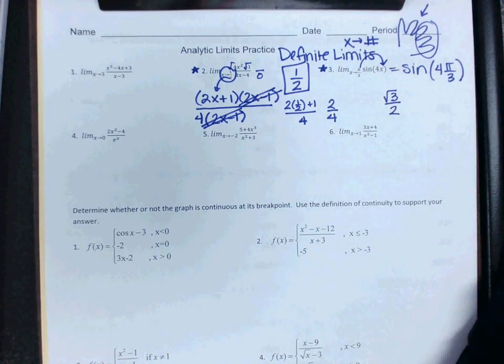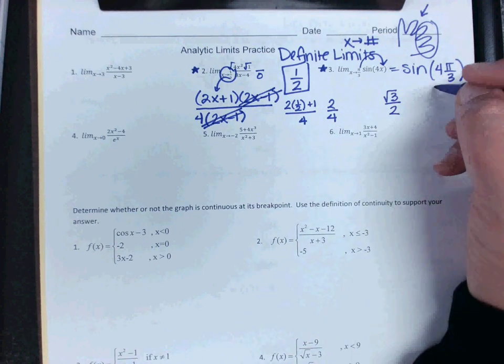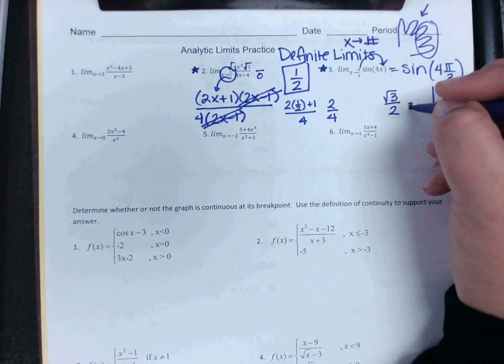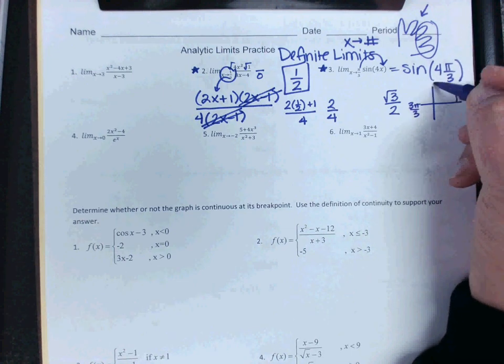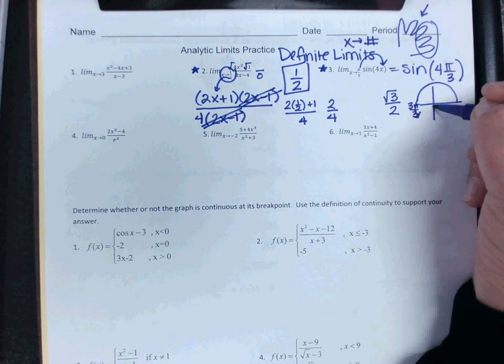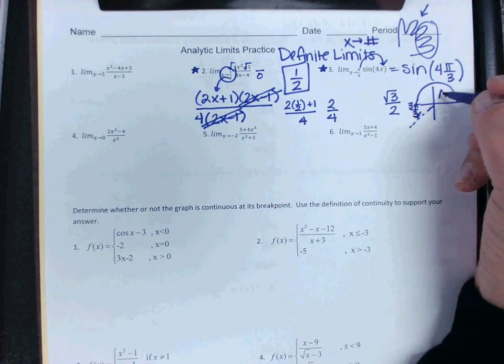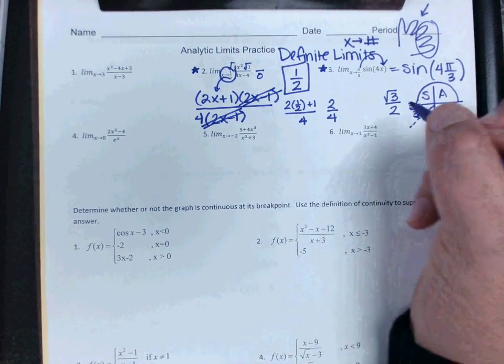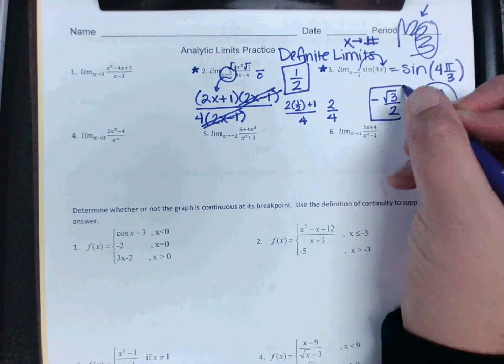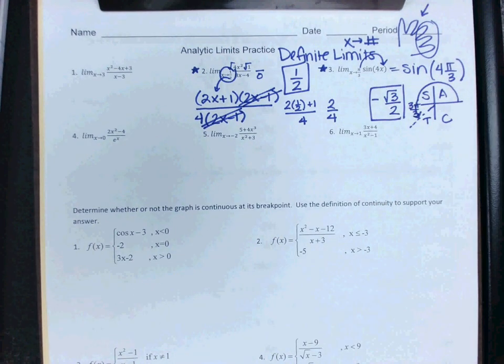But then we need to check what quadrant we're in for 4π thirds. So remember that this is 3π thirds. So if I want to go to 4π thirds, I'd have to go 3 and then one more. That puts me right here. So that would be all students take calculus. Tangent is positive. That means sine is negative. So remember each of your methods. See what you can do on that next section.